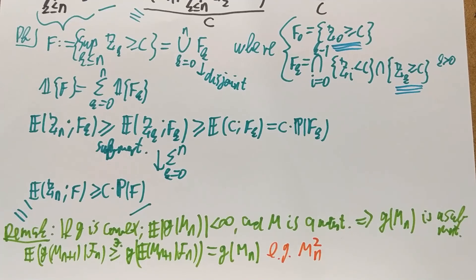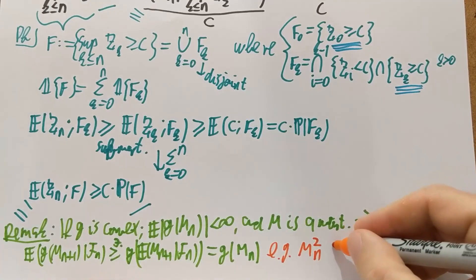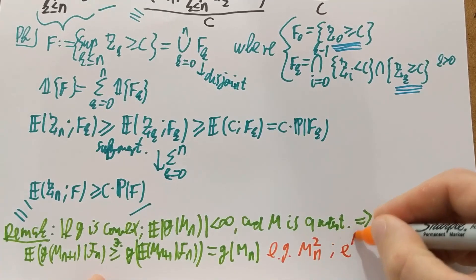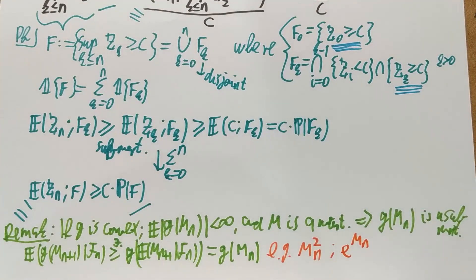So very often you'll see taking the square of a martingale and do a submartingale's inequality there. Another example is exponential of M_n, assuming that it's still finite mean. That's again a non-negative convex function of a martingale, and you can apply Doob's submartingale inequality on that.